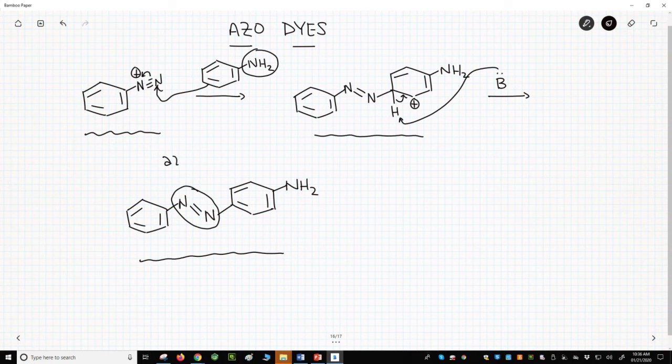This is called an azo group. The azo group connects the two aromatic rings.